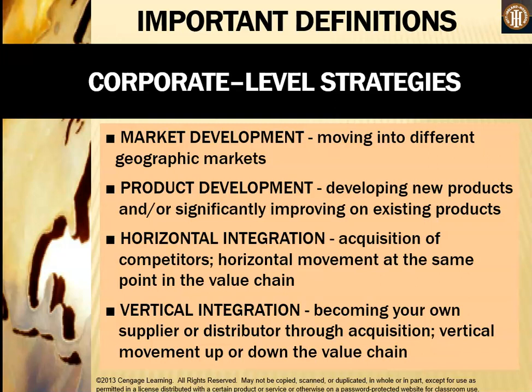Some corporate level strategies include market development — moving into different geographic markets — and product development — developing new or significantly improved products. We also have horizontal integration, which is the acquisition of competitors at the same point in the value chain; for example, if you make milk and you acquire another company that also makes milk. Vertical integration is also a corporate level strategy — becoming your own supplier or distributor through acquisition, moving up or down the value chain, which we covered in the previous unit.